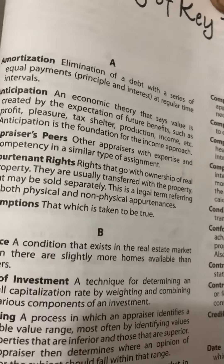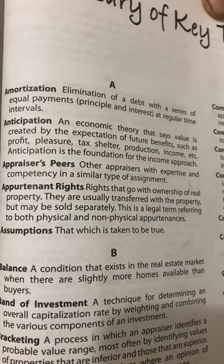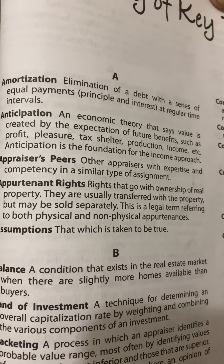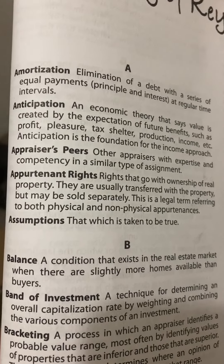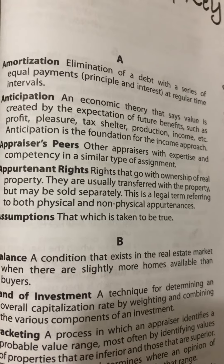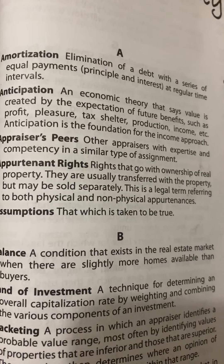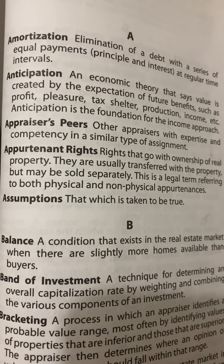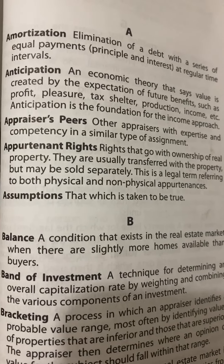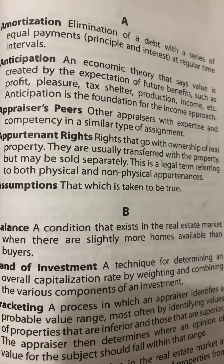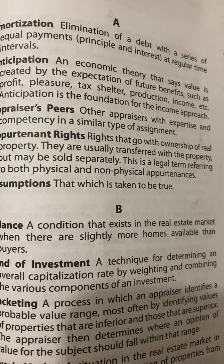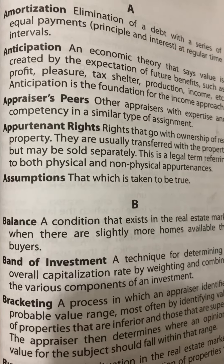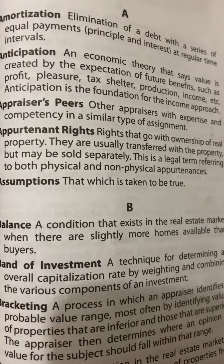Appraisers Peers: other appraisers with expertise and competency in a similar type of assignment. Appurtenant Rights: rights that go with ownership of real property. They are usually transferred with the property, but may be sold separately. This is a legal term referring to both physical and non-physical appurtenances. Assumptions: that which is taken to be true.